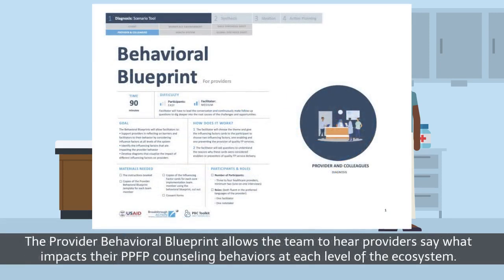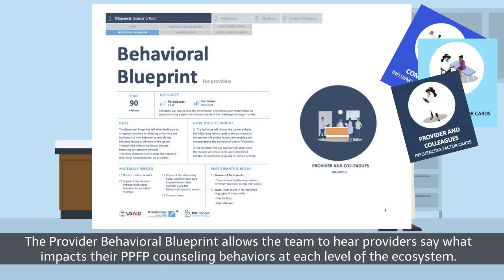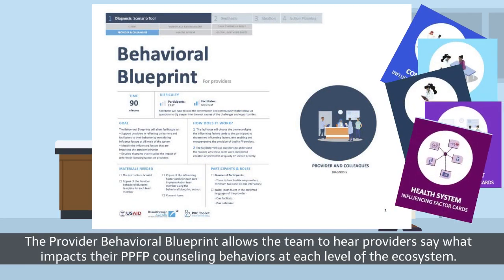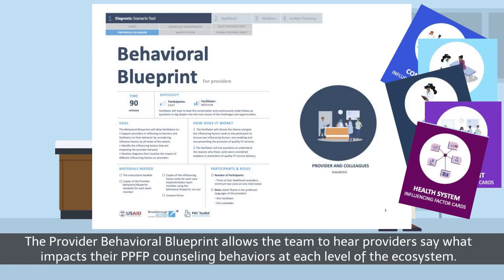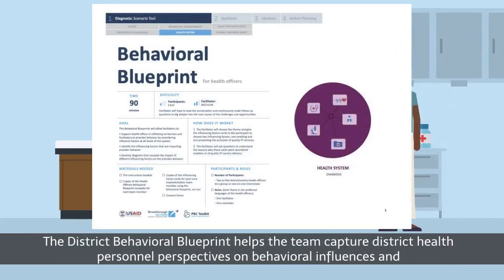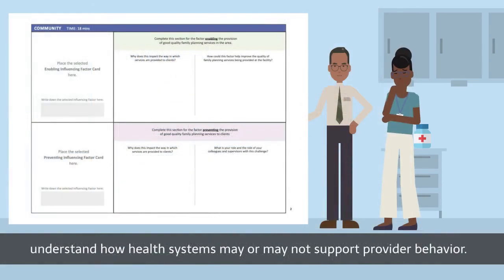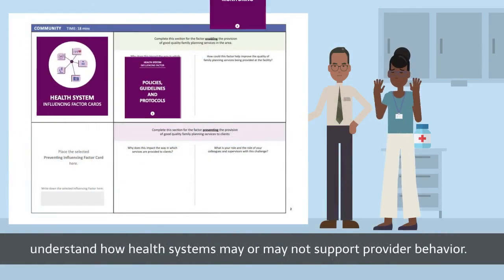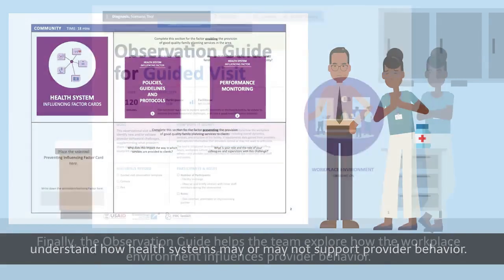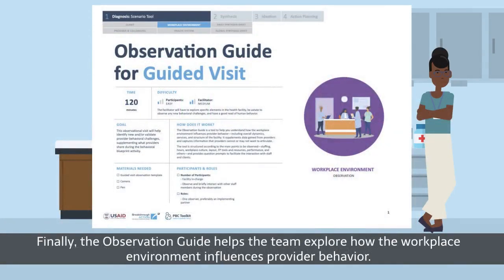The provider behavioural blueprint allows the team to hear providers say what impacts their PPFP counselling behaviours at each level of the ecosystem. The district behavioural blueprint helps the team capture district health personnel perspectives on behavioural influences and understand how health systems may or may not support provider behaviour. Finally, the observation guide helps the team explore how the workplace environment influences provider behaviour.